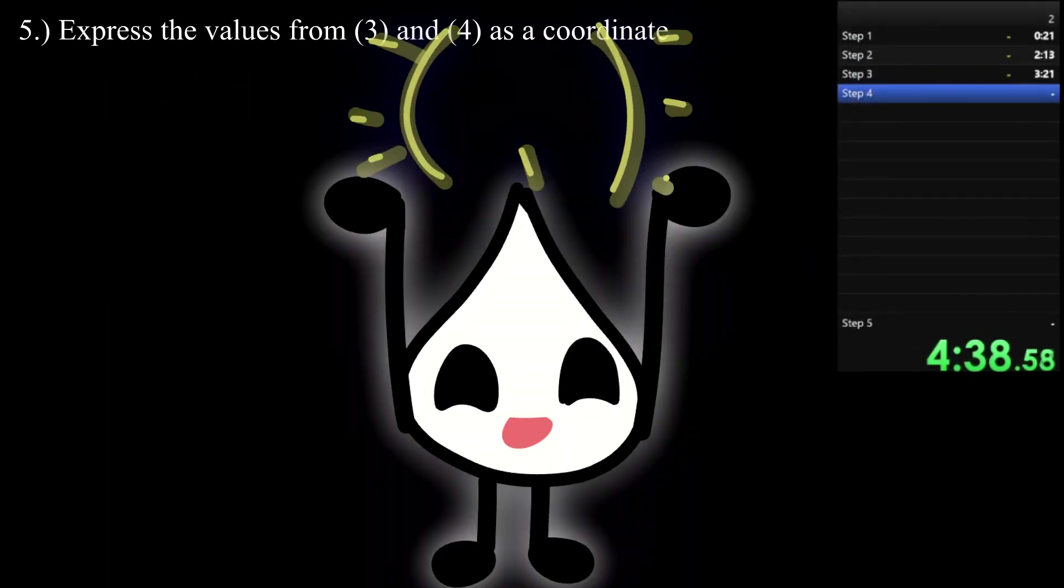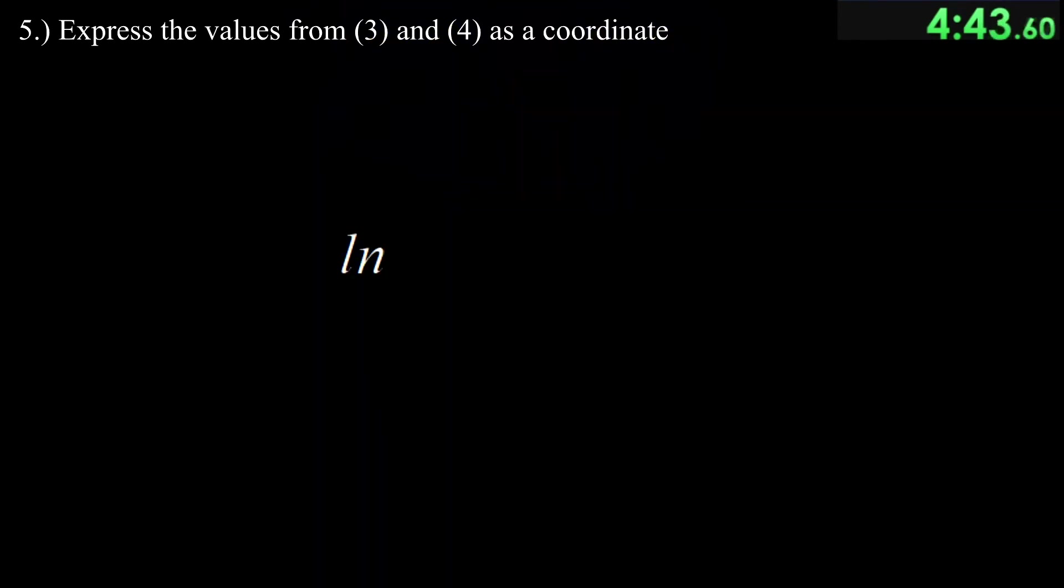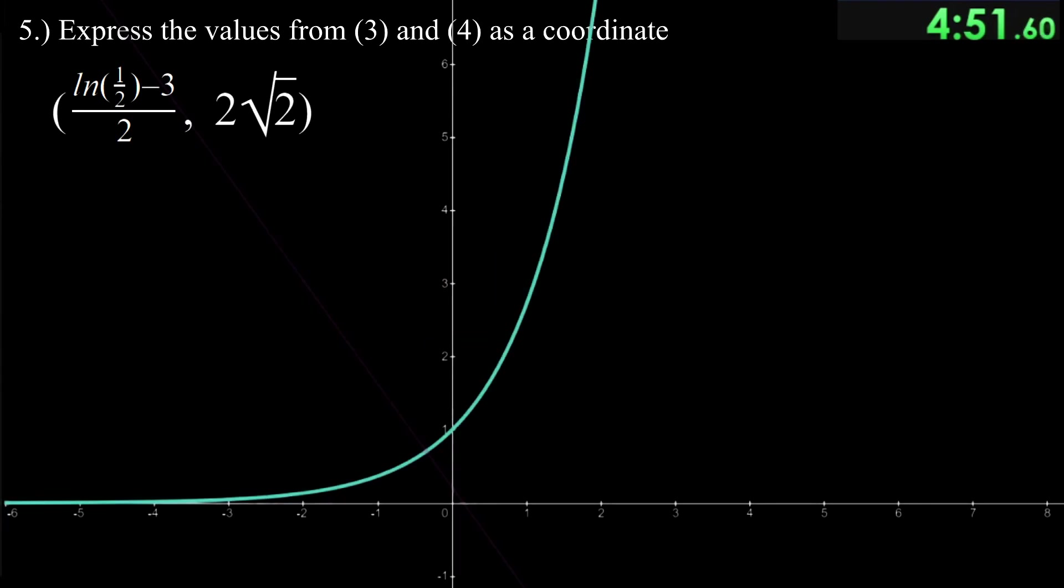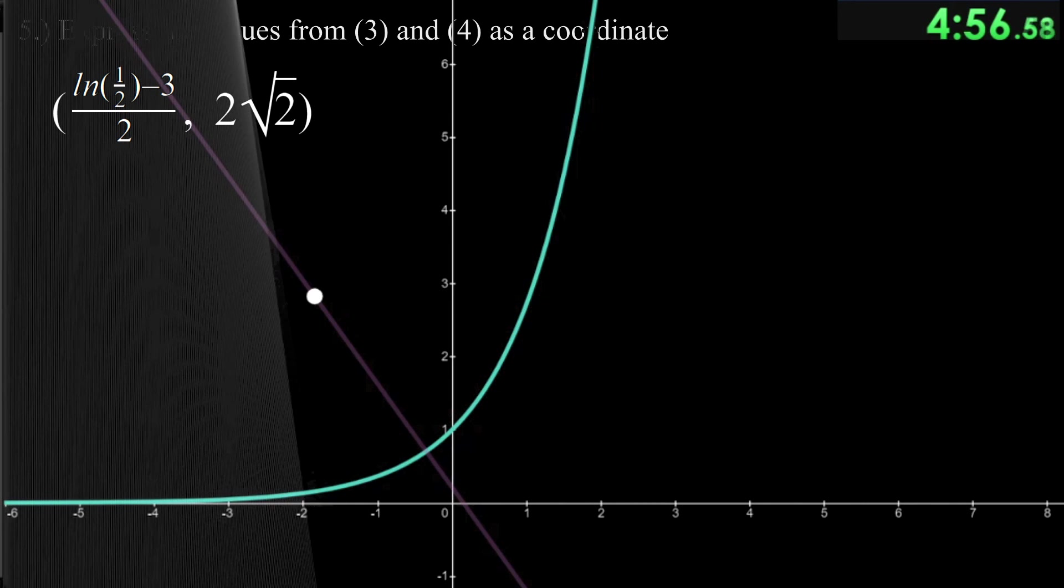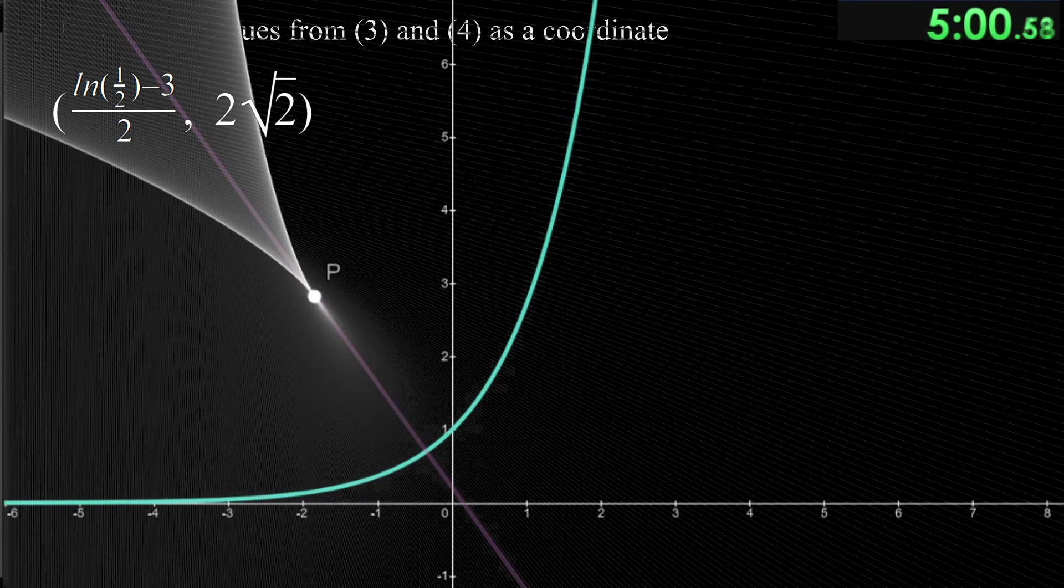Now, we combine those step 3 and 4 values into a coordinate where we have ln 1 half minus 3 halves and 2 root 2. This here is our step 5 answer, which is a point on the normal line we mentioned. Lastly, when we draw every normal line on e to the x, we can confirm that this point is the pseudo-focus.